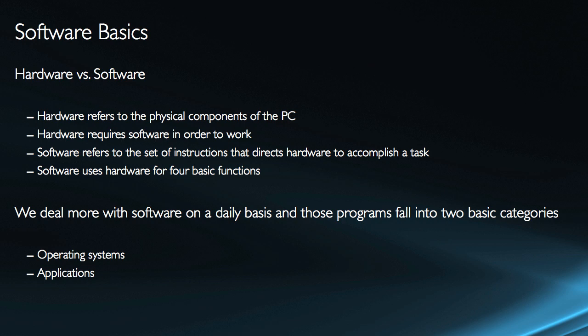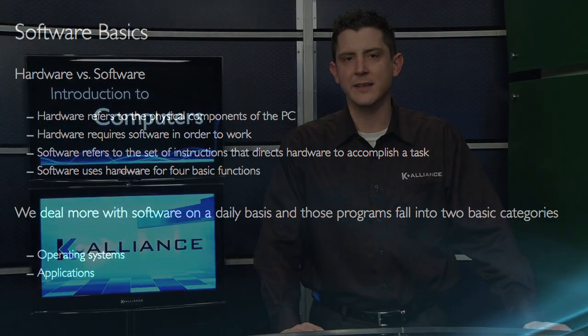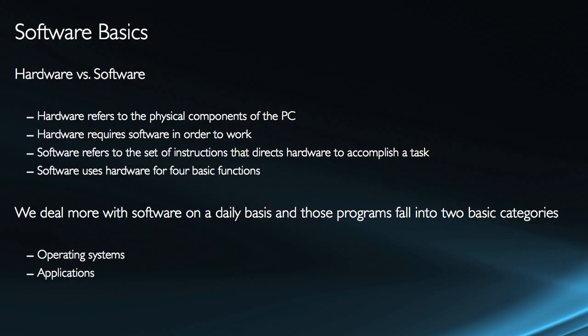Now that we've discussed the basics of hardware, we're going to look at software. Hardware, remember, refers to the actual physical components of the PC — the drives, the memory, the CPU. But hardware requires software in order to work. Basically, software is the set of instructions that directs the hardware to accomplish a specific task. I need an operating system like Windows to tell the processor to go find a program on the hard drive, load it into memory, and then display it on my window.